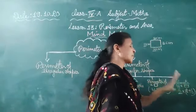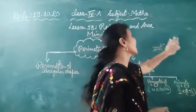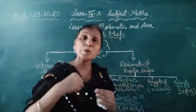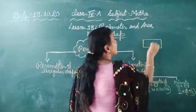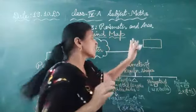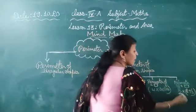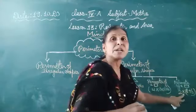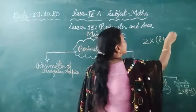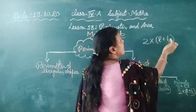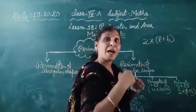Now comes the perimeter of a rectangle. You know about the rectangle — rectangle mein opposite sides equal hoti hain. So for the perimeter of a rectangle, we use this formula: 2 multiplied by (length plus breadth). Length given hai, breadth given hai — hum dono ko plus karke 2 se multiply karenge.